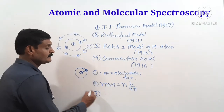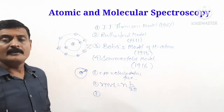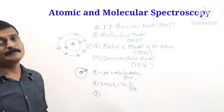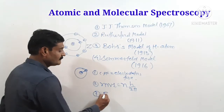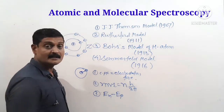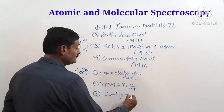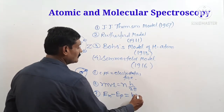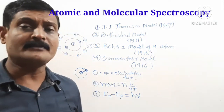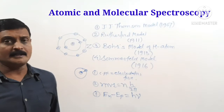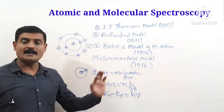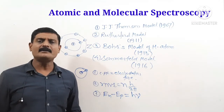The third postulate states that when an electron jumps from a higher orbit to a lower orbit, it emits energy in the form of a photon. The energy emitted equals En minus Ep — the energy difference between the two orbits — and this energy equals hν, where h is Planck's constant and ν is the frequency of the emitted radiation.